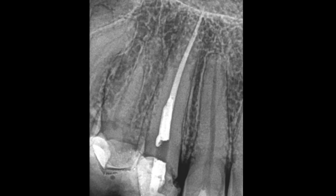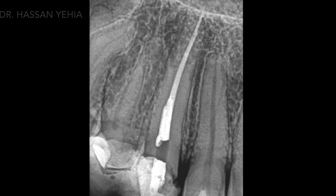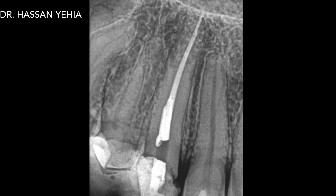To wrap things up: first, make sure you're able to clearly visualize the file before going after it — it's going to make life easier and prevent any harm. Then flare the coronal third of the canal with a modified Gates Glidden. After that you can start introducing the ultrasonics, being really patient, going around the file, and trying to retrieve it.